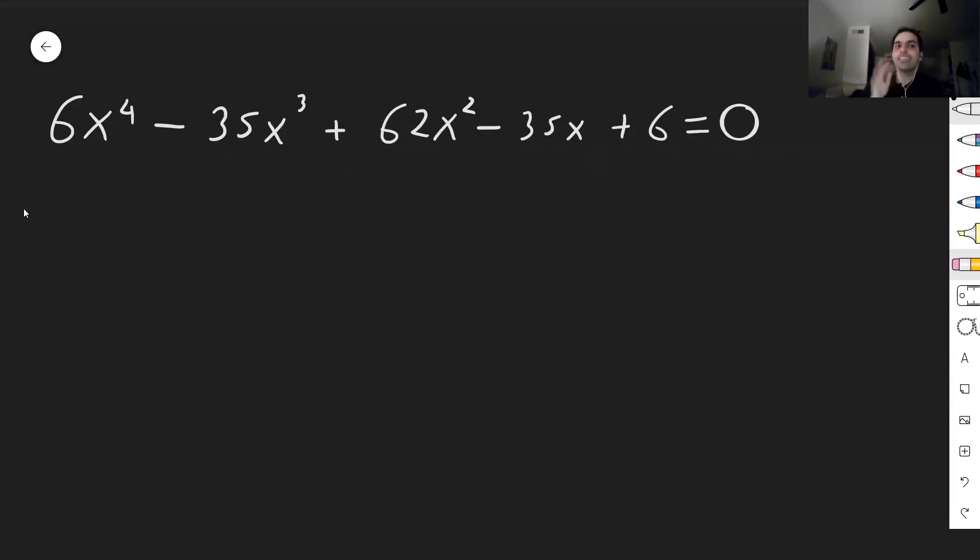So for instance, let's try to find the zeros of 6x to the fourth minus 35x cubed plus 62x squared minus 35x plus 6 equals zero.